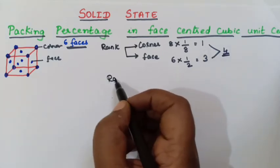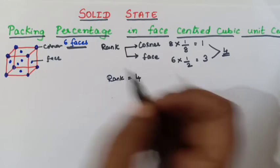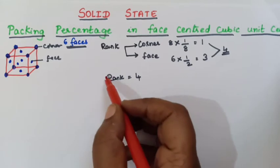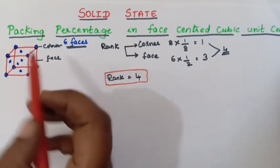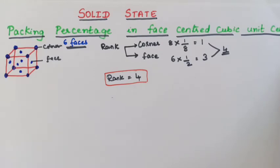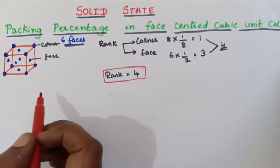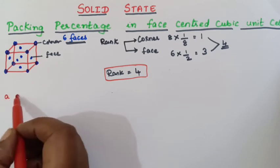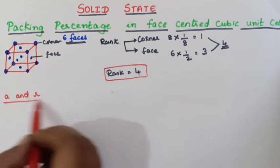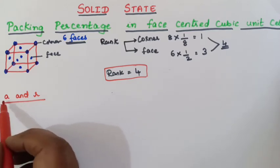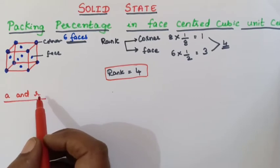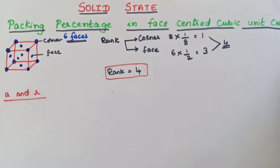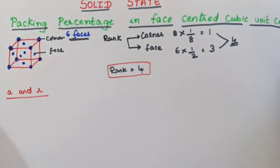So what is the rank of FCC? The rank of FCC is found to be 4. So this is the first step to calculate the packing percentage in FCC. The second step will be you should calculate what is the relationship between A and R — where A is the edge length and R is the radius of the atom.